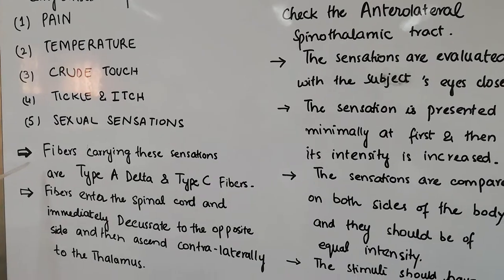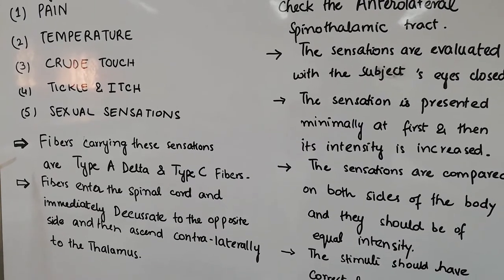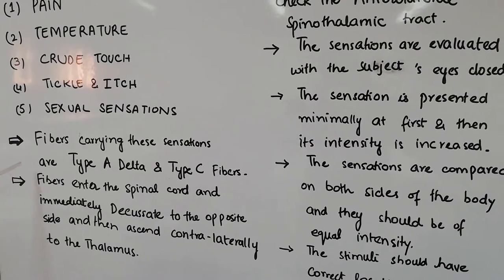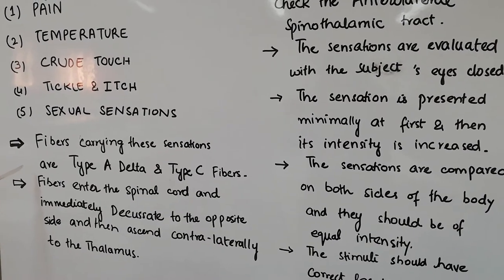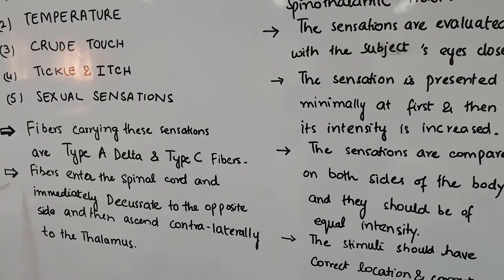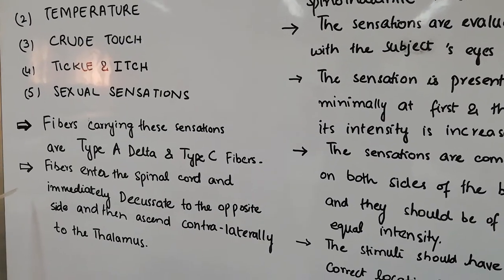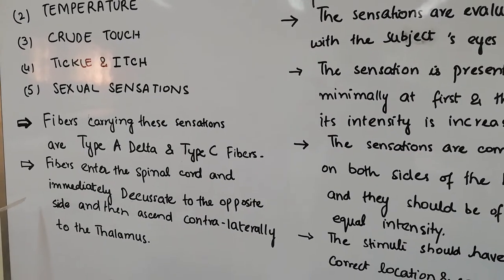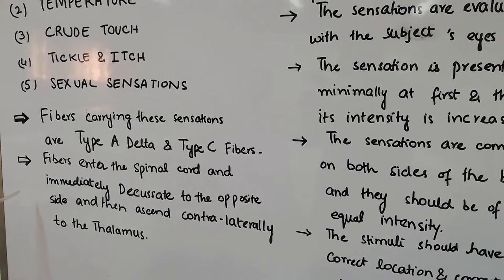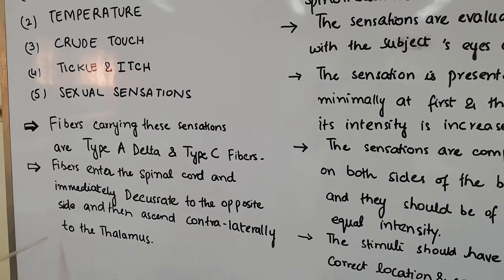The nerve fibers carrying these sensations from the periphery to the central nervous system are type A delta and type C fibers. These fibers enter the spinal cord and immediately decussate, or cross over, to the opposite side in the spinal cord, and then ascend to the thalamus.